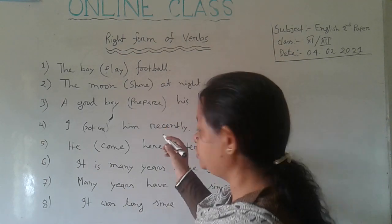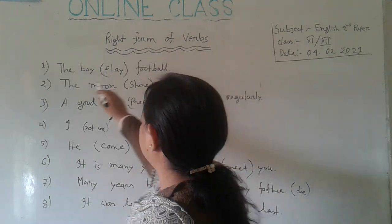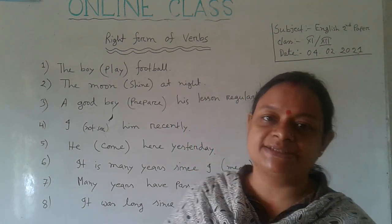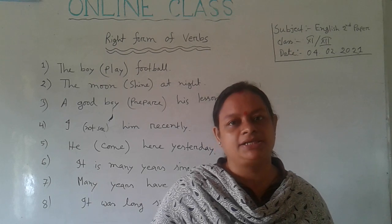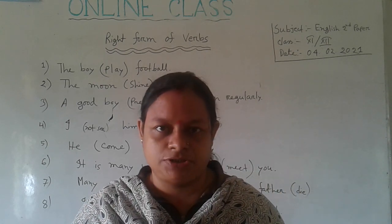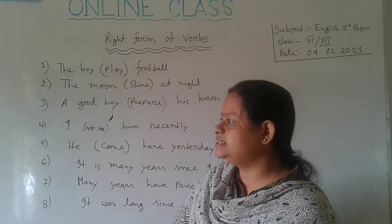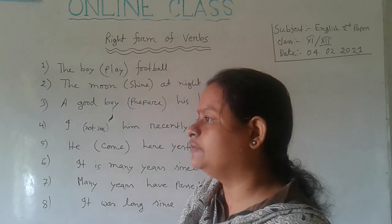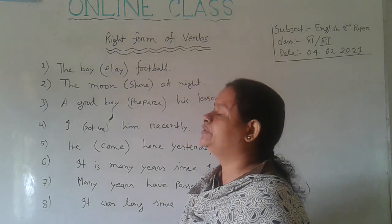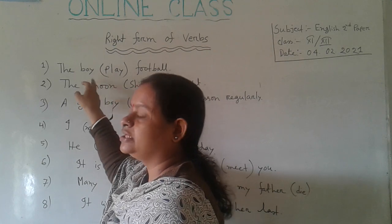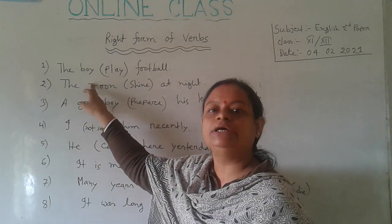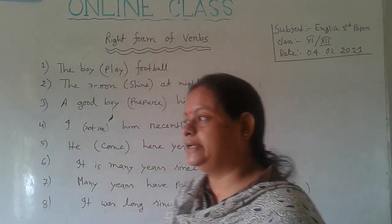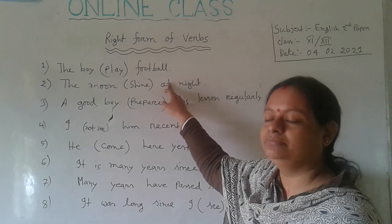Let's start our topic. To place the verb in the right form, you have to keep in mind three things: number one, tense — you have to see whether the sentence is in present, past, or future tense; number two, subject — whether the subject is singular or plural, third person or second person; and number three, whether the sentence is in active voice or passive voice.